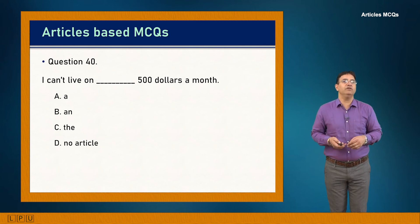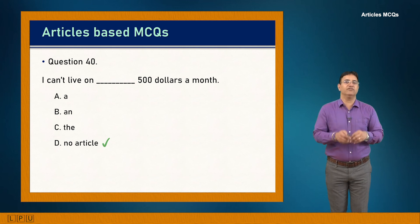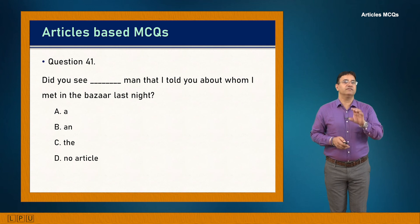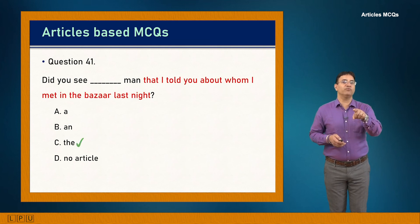Question 40: I can't live on five dollars dash month. 'A month' — used as a measurement unit. Answer is A: 'I can't live on five dollars a month.' Question 41: Did you see dash man that I told you about whom I met in the bazaar last night? Multiple clauses identify the man — definite. Answer is C: 'Did you see the man that I told you about?'